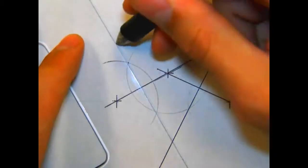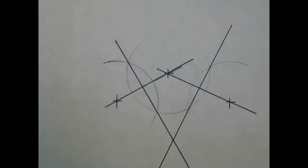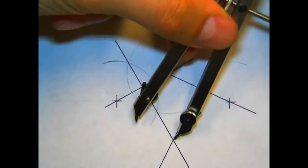Once we've bisected our lines, the intersection point between our bisection lines is where the center of our circle or arc is going to be.